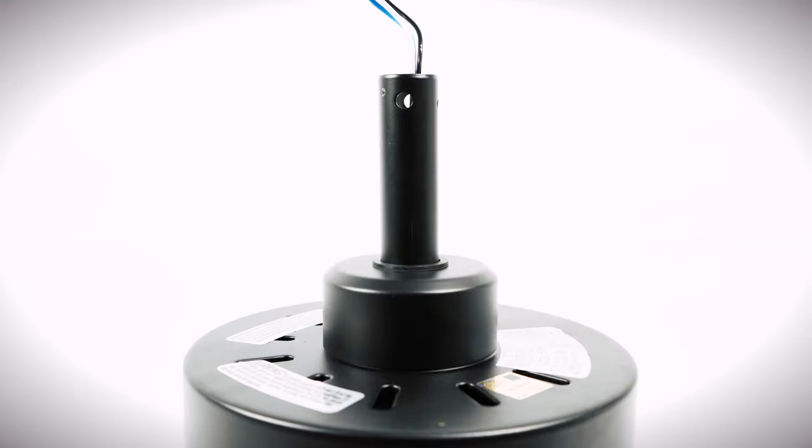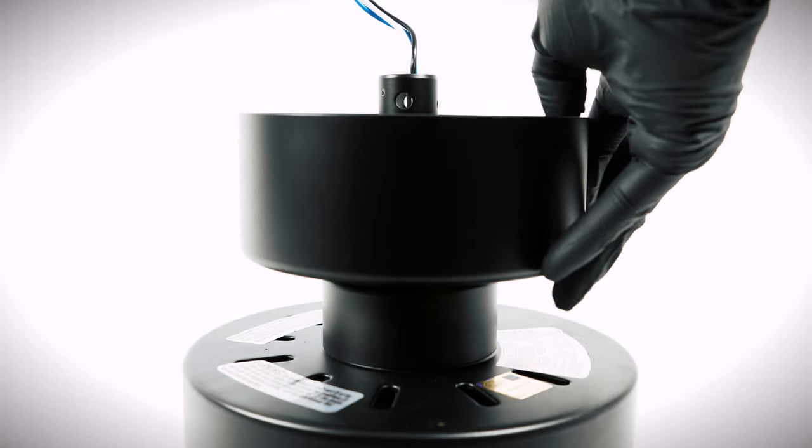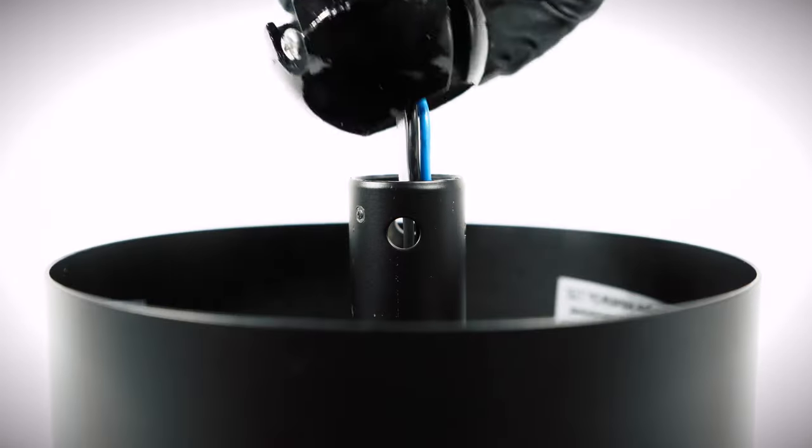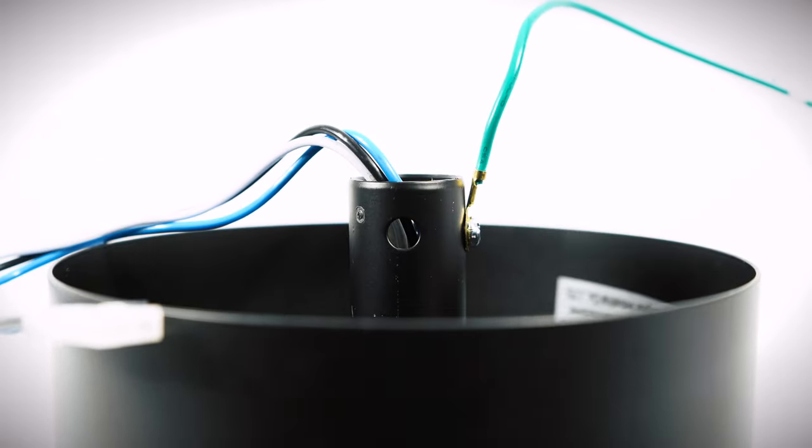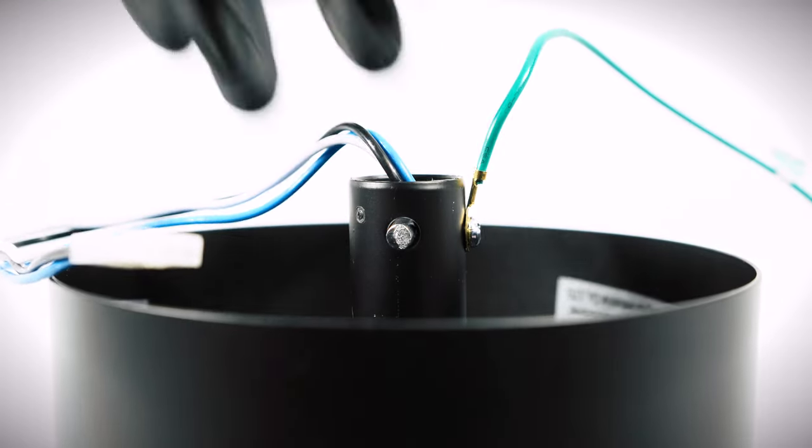Slide the coupling cover, canopy bottom cover, and canopy over the downrod. Reinstall the hanger ball, being sure to attach the ground lead, insert the cross pin, and tighten the set screw against the side of the downrod.